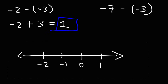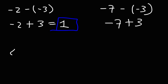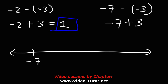Now for the last example: negative 7 minus negative 3. We have a negative times a negative, which is a positive. So this becomes negative 7 plus 3. Using a number line we'll start with negative 7 and add 3 to it, traveling 3 units to the right: negative 6, negative 5, negative 4. So negative 7 plus 3 is negative 4.